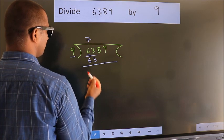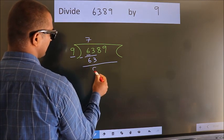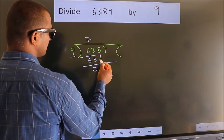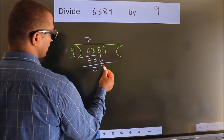Now we should subtract. We get 0. After this, bring down the beside number. So, 8 down.